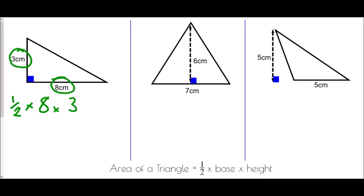Because we are multiplying three numbers together, multiplication can happen in any order. Generally we'll multiply the base and the height first and then halve the answer. So 8 times 3 is 24, and a half times 24 gives us 12. Our area is 12 centimetres squared.